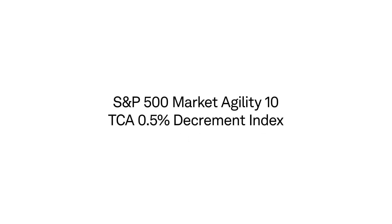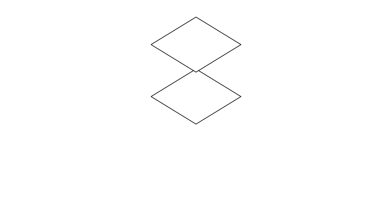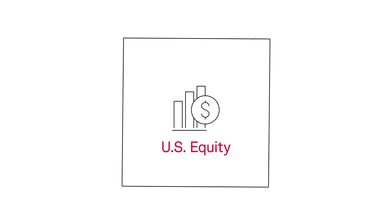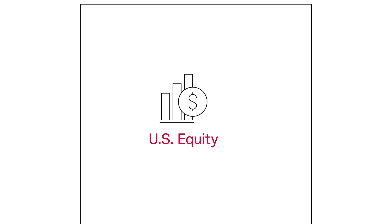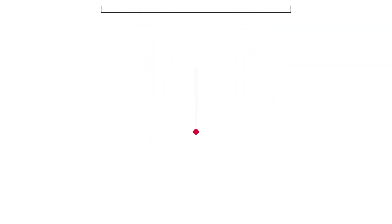The S&P 500 Market Agility 10 TCA Index, or S&P 500 Market Agility 10 Index for short, adds another layer of innovation by measuring the performance of U.S. equity and treasury index components, with the flexibility to hold theoretical long or short positions in both asset classes.